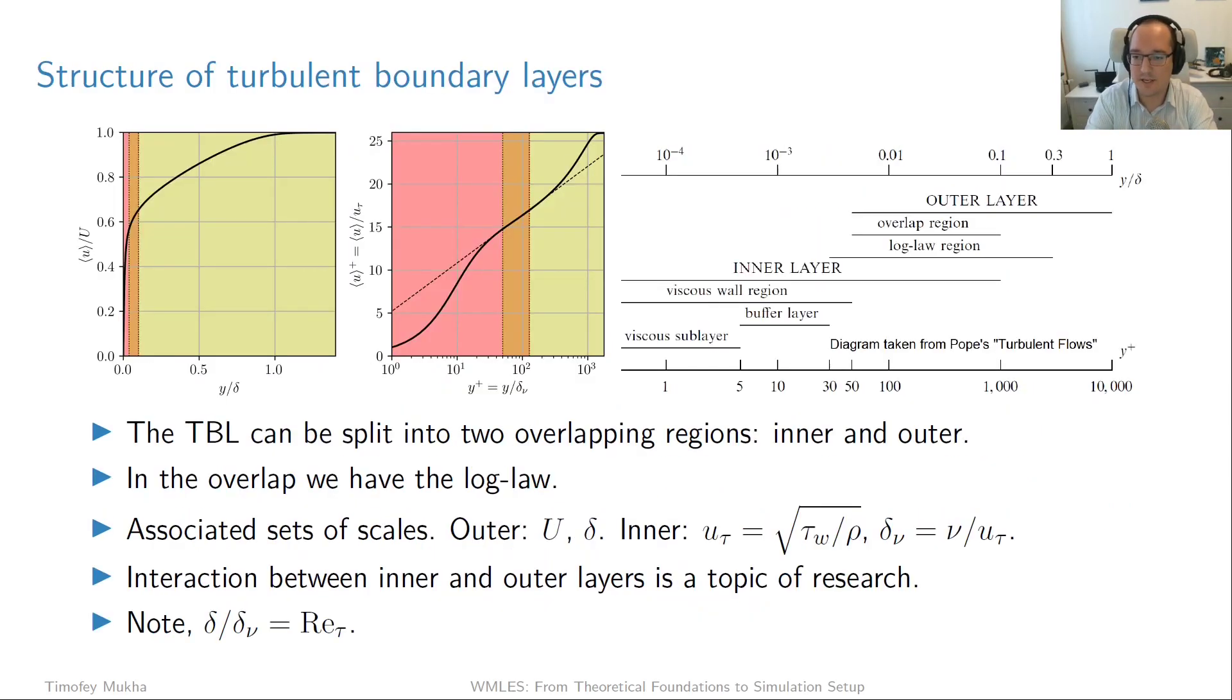Okay, so as I said, in order to understand wall modeling, we need to review the structure of turbulent boundary layers. The reason for that really is because all the hybrid turbulence modeling approaches which somehow blend LES with something else are conveniently defined in terms of the velocity profile and the turbulent structures inside turbulent boundary layers over flat walls usually. So what we have here on the left side is the mean velocity profile inside a turbulent boundary layer, and this profile can be split into two overlapping regions called the inner region and the outer region. The outer region is this whole big yellow square here, and the little pink rectangle, the much smaller one, is the inner region, and the orange one is where they overlap.